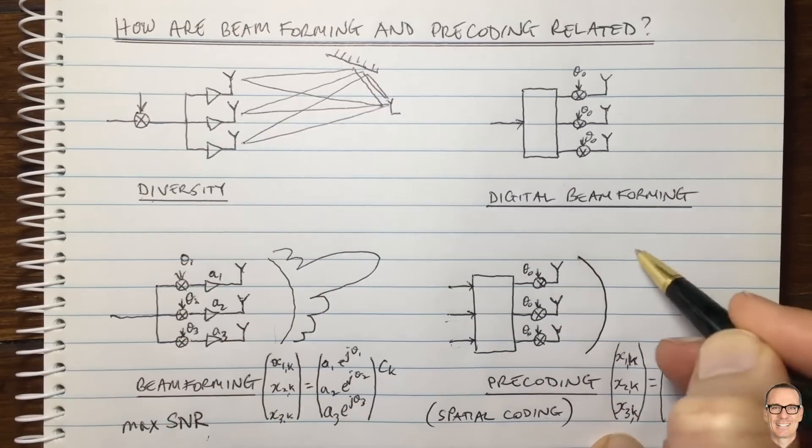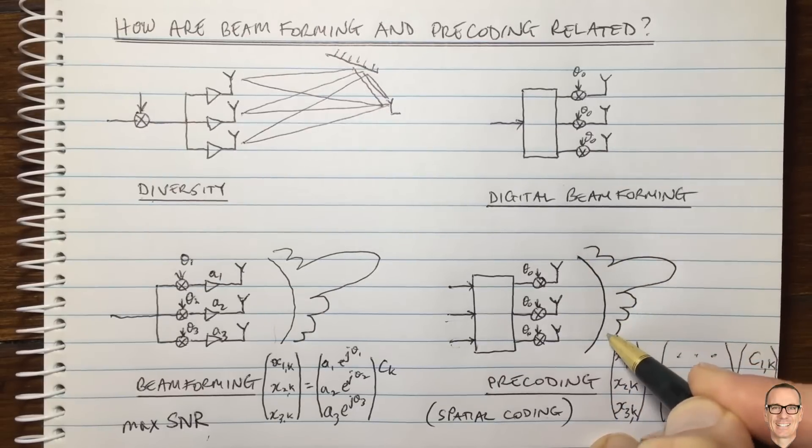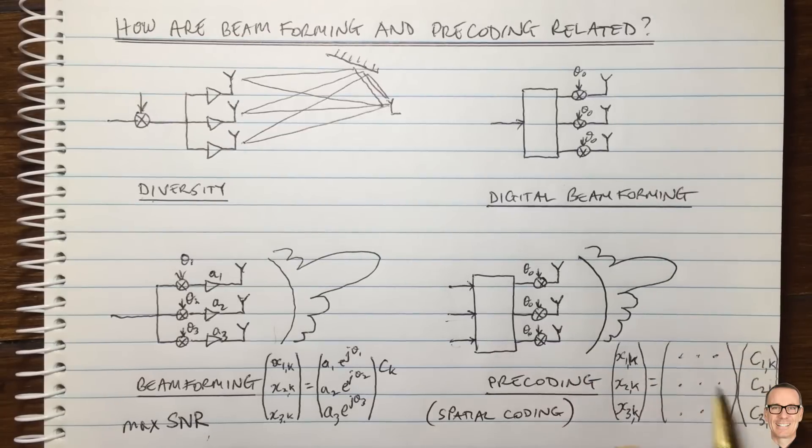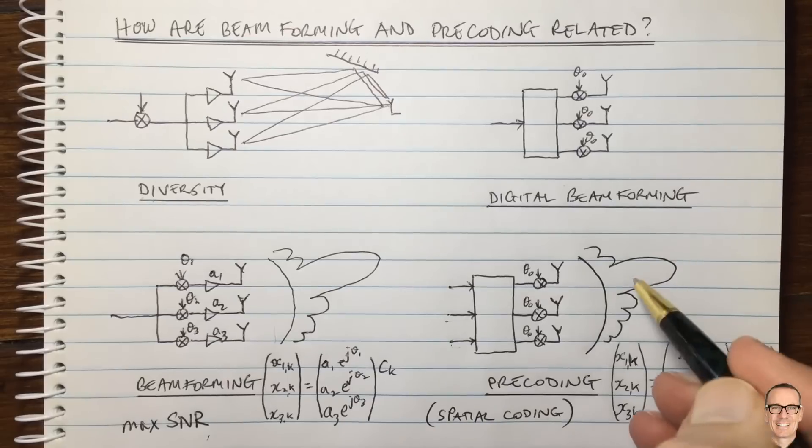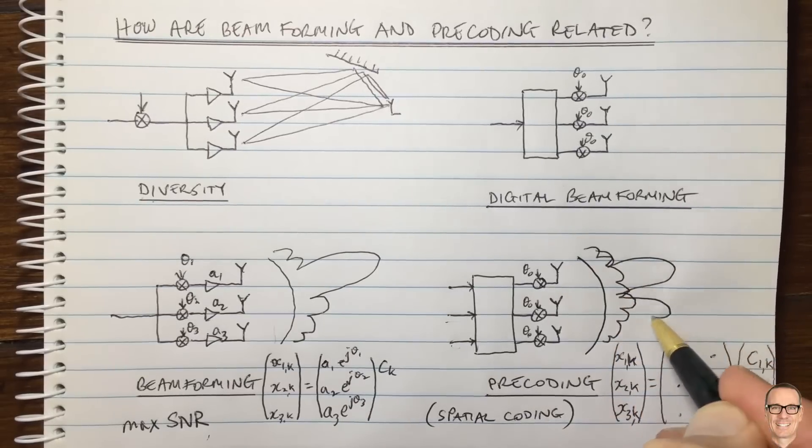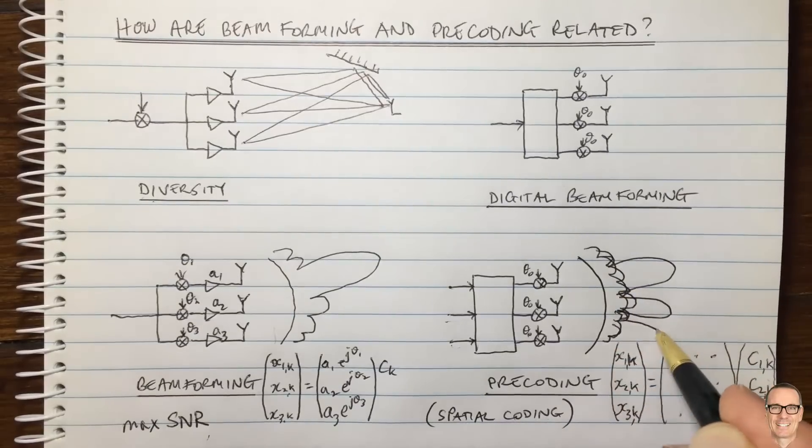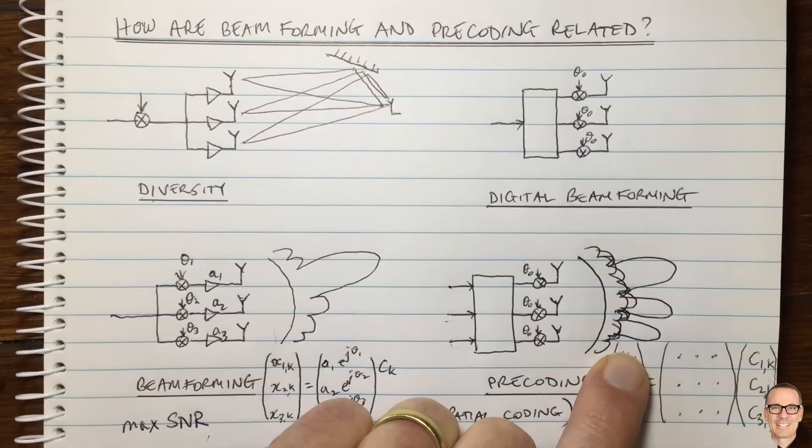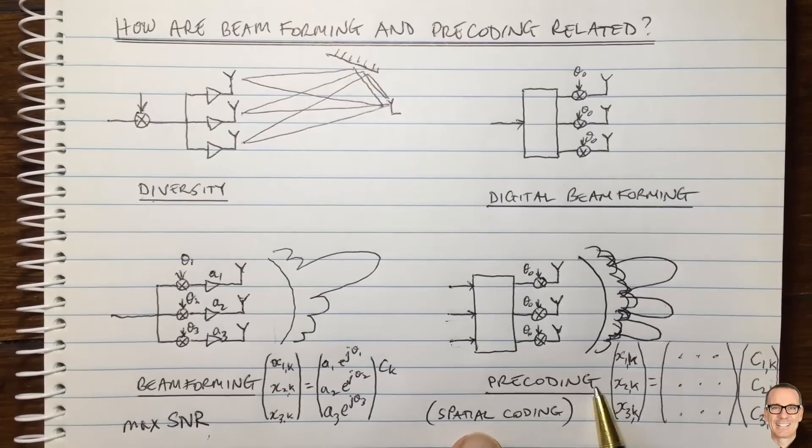And that would give us, for example, in terms of an overall radiation pattern, the first beam would be our radiation pattern from stream one, if we put this vector here as the first column. And then we could have other columns for other shaped beams for the other two columns. And then we would have a situation here with three beams, for example. And that's one way of implementing precoding.